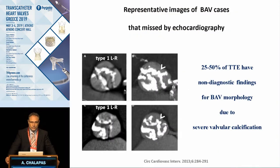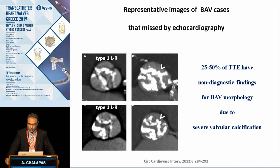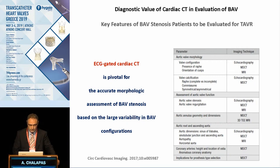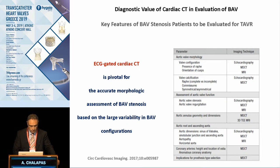We know that echocardiography, which is the initial imaging tool to evaluate such patients, can miss the true bicuspid valve in up to 50% of cases. Therefore, CT is the gold standard imaging tool to assess not only the whole anatomy from the peripheral vessels to the aortic valve, but also to understand the different anatomical heterogeneities that occur.